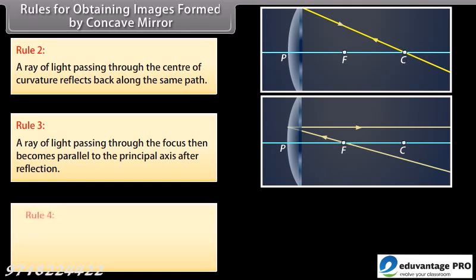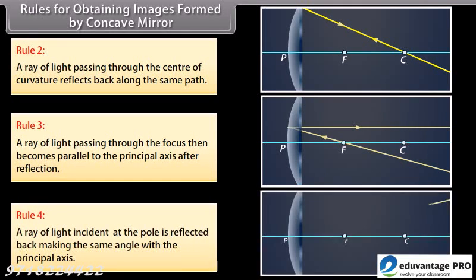Rule 4: a ray of light incident at the pole is reflected back making the same angle with the principal axis.